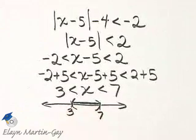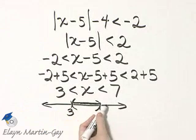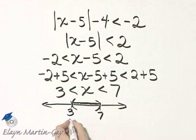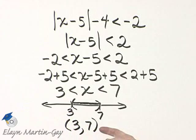And now write it in interval notation by simply writing what you've shaded from left to right. So parenthesis 3, comma, 7, parenthesis. There's the solution set in interval notation.